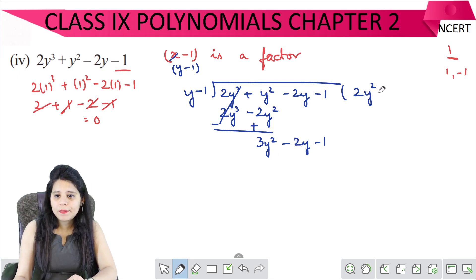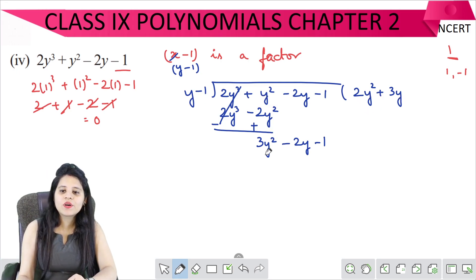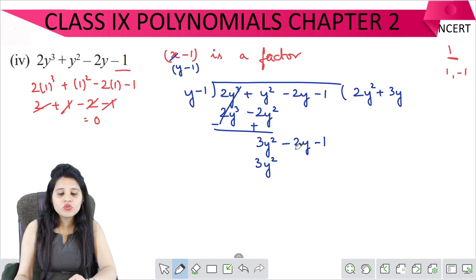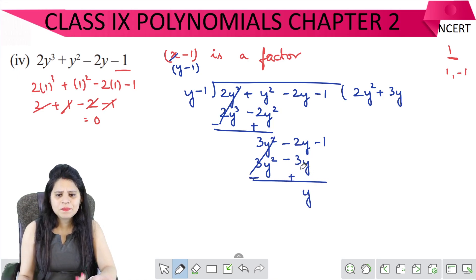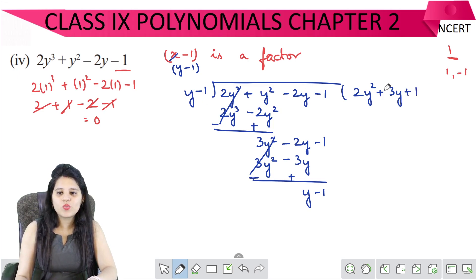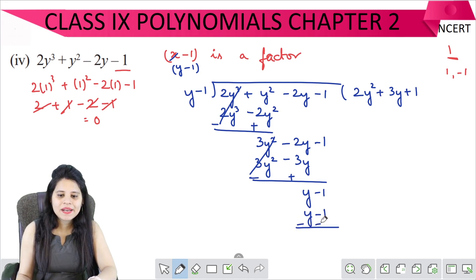Now y into 3y squared gives plus 3y, and y into y gives y squared, so minus 3y squared. Then minus 1 into 3y gives minus 3y. Again, sign change — it is plus, it is minus, it cancels out. Plus minus gives minus. We bring down minus 1. Then y into minus 1 gives y minus 1, so y minus 1 — it is minus, it is plus, it cancels out. Remainder is 0.